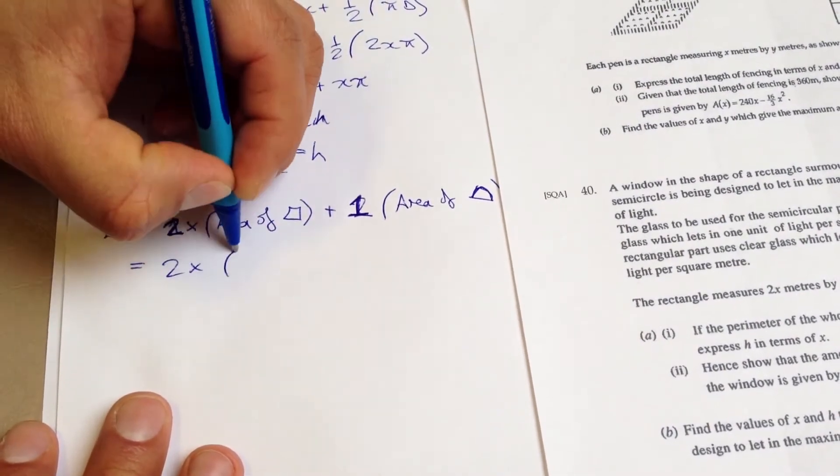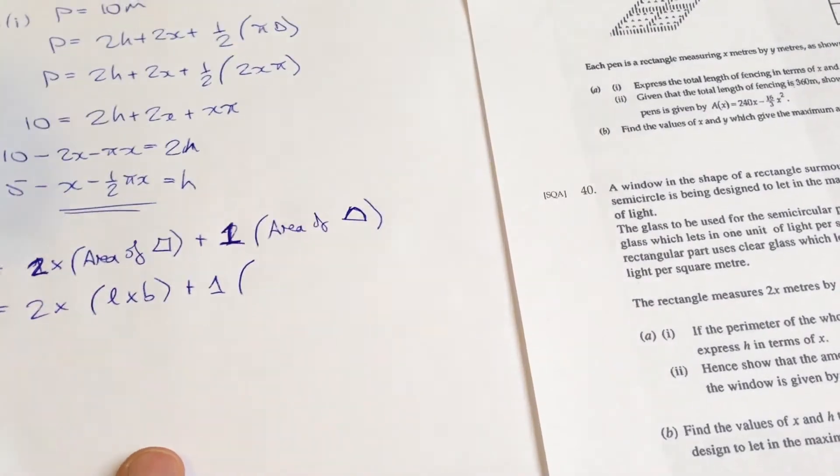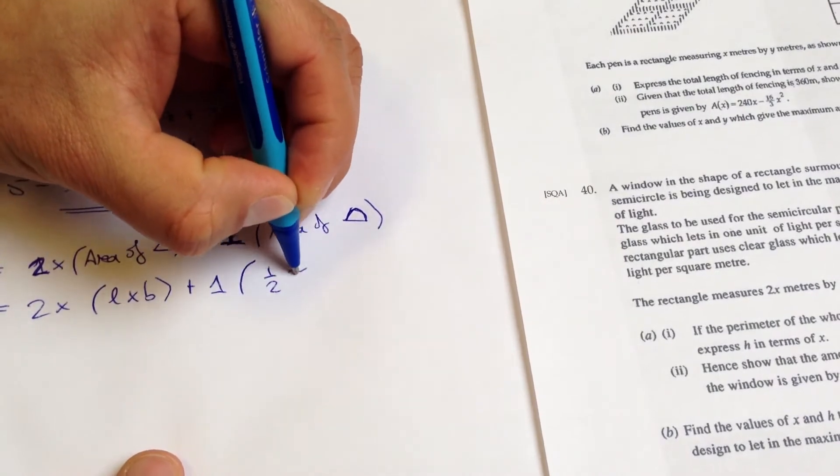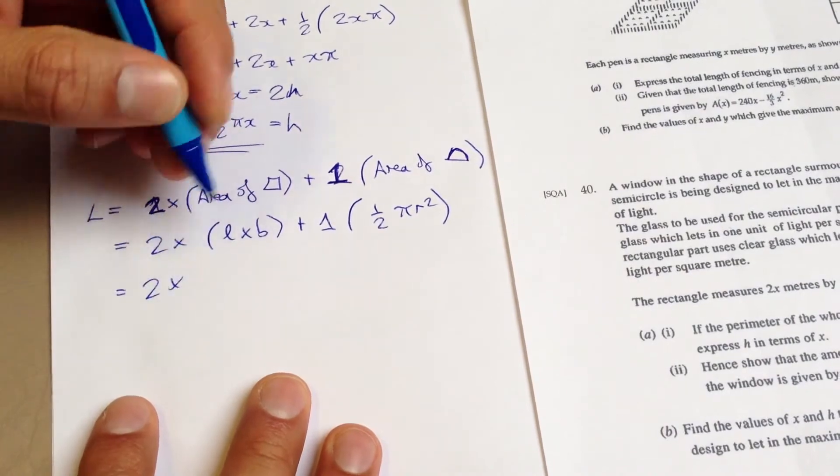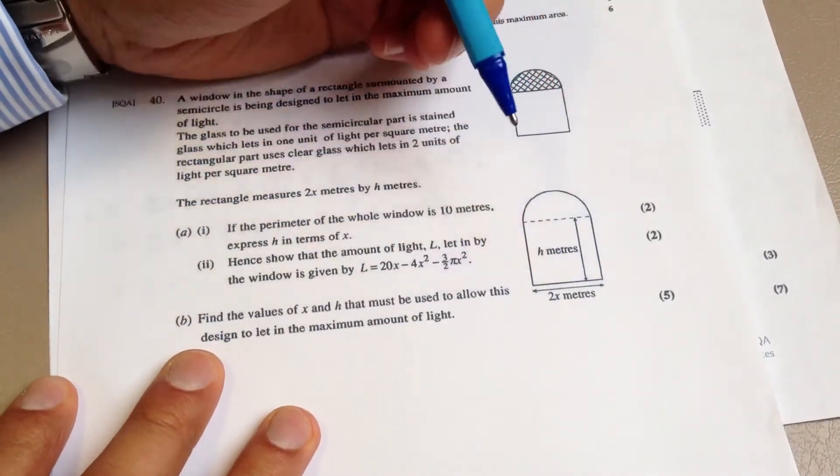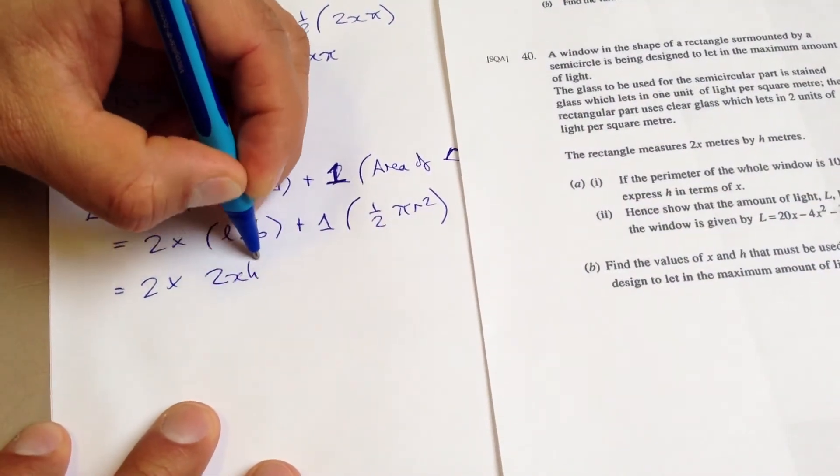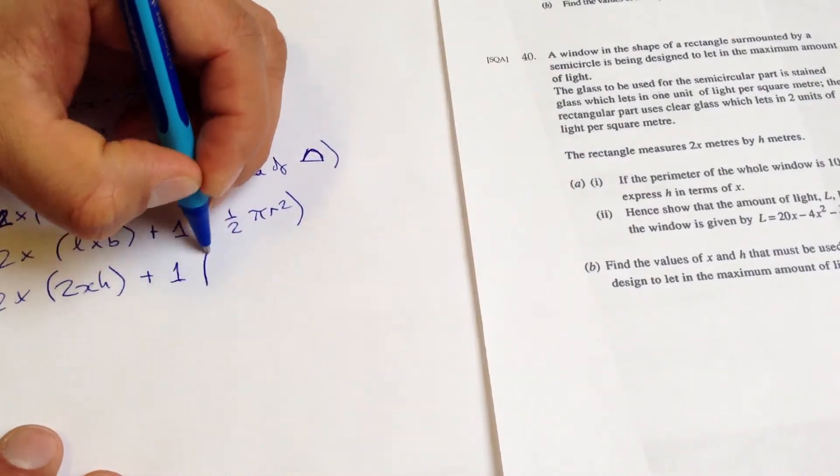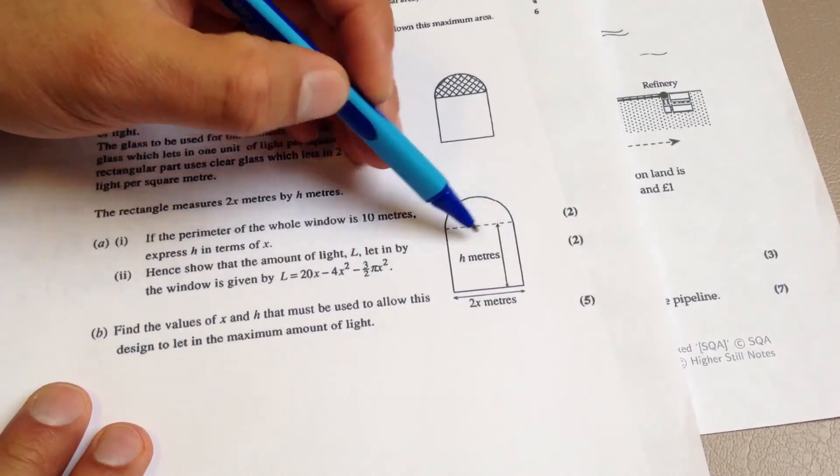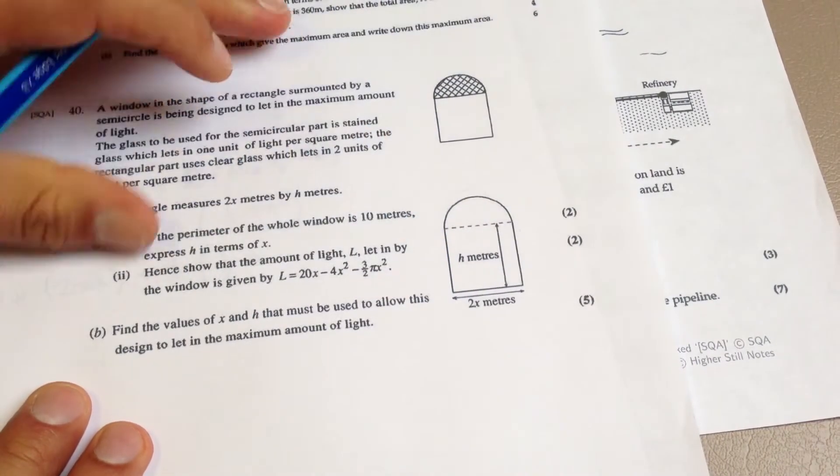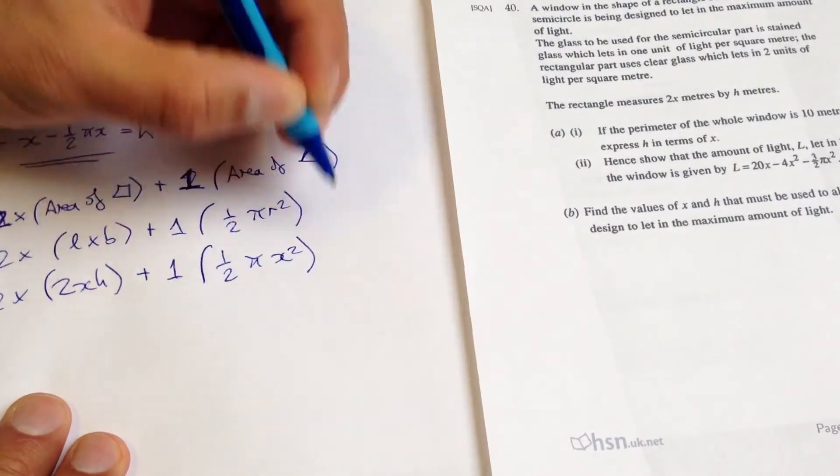So that's two times the area of a rectangle, length times breadth, plus one times the area of a circle or semicircle in this case will be a half pi r squared. So that'll be two times the length of this is 2x and we'll call the breadth h. So that'll be two x h plus one times a half pi. And the radius is just going to be a half of the diameter, which will be a half of 2x, which will simply be x. So it'll be a half pi x squared, like so.